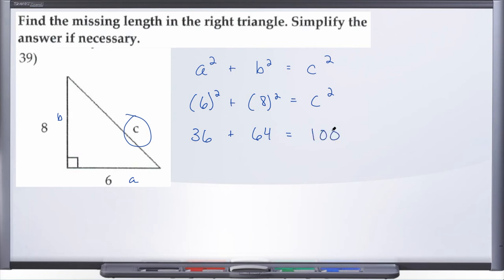Alright, well this number here, this 100, is c², but we're not asked for c², we're just asked for c. So how can we eliminate one of the powers here so that we are just working with c? Well, if you said take the square root, then you got it.